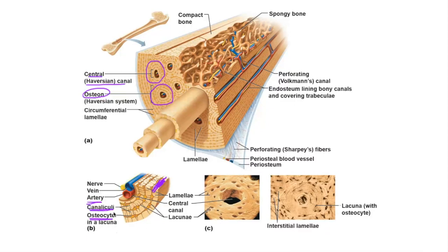Osteocytes don't actually divide. They arise from osteoblasts and maintain the bony matrix, and they can live in their little lacunae for a really long time — sometimes up to 25 years, or as long as the organism itself.